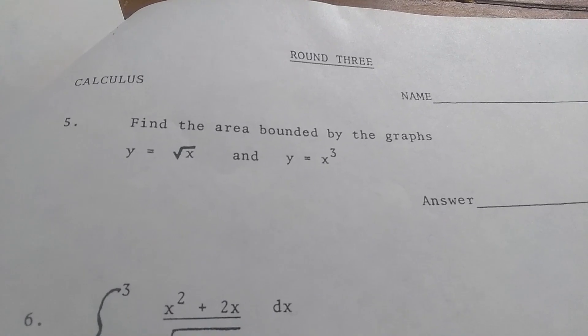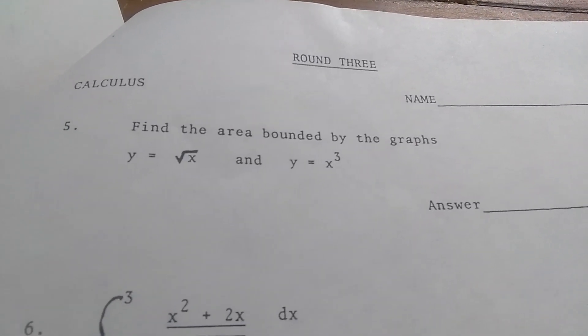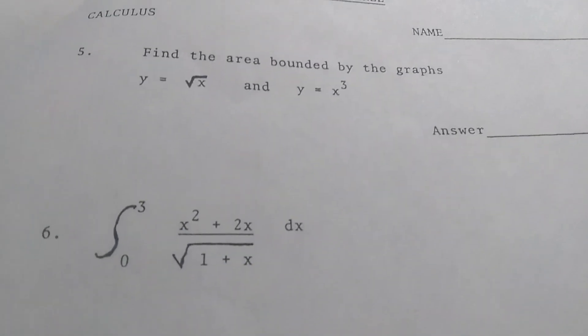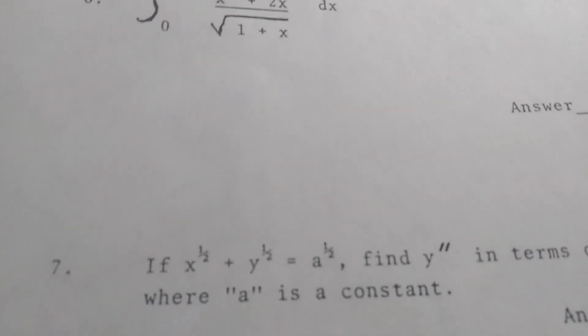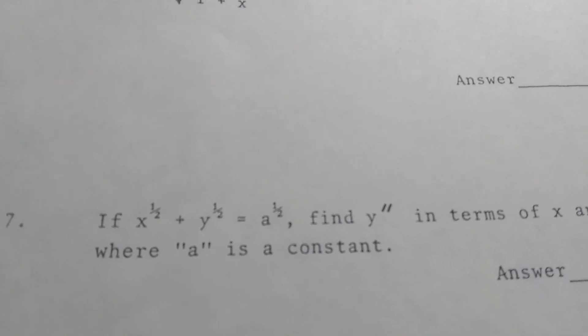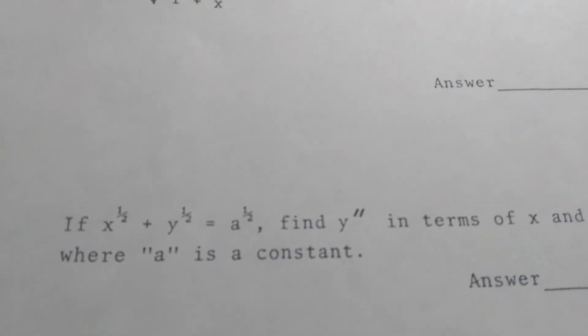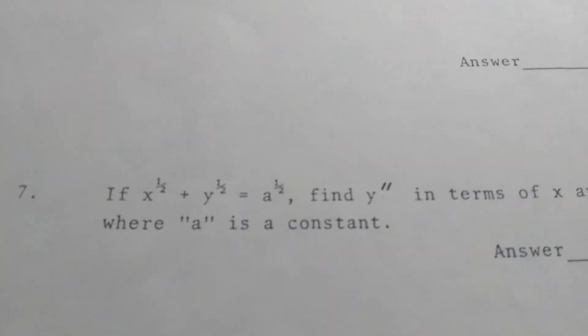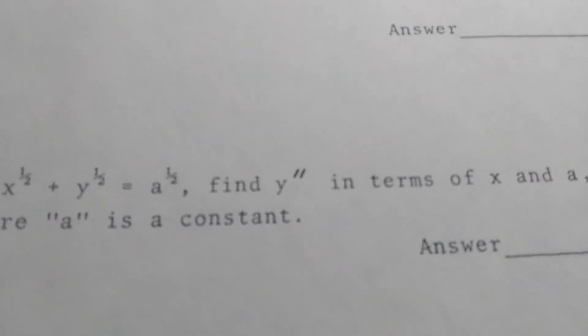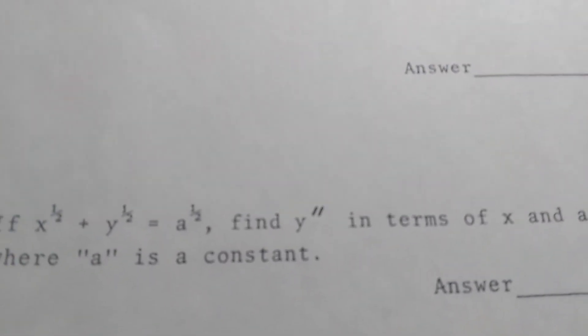So find the area bounded by the graph. It does not look too difficult. Then we have a definite integral. And then we have this problem here. If x to the one half plus y to the one half equals a to the one half, find y double prime in terms of x and a, where a is a constant. I love how they handwrite the prime symbols in.